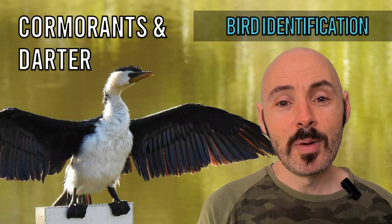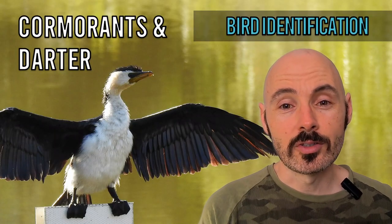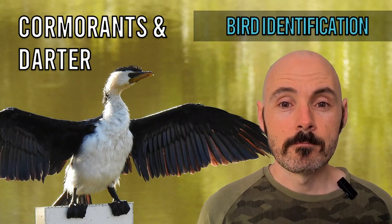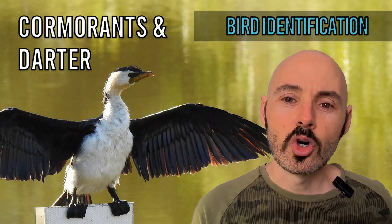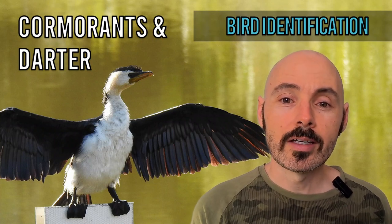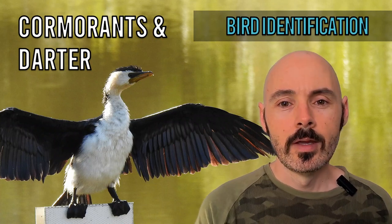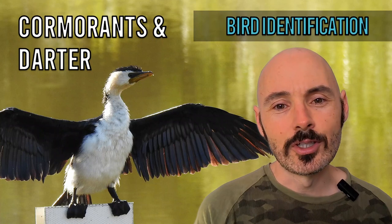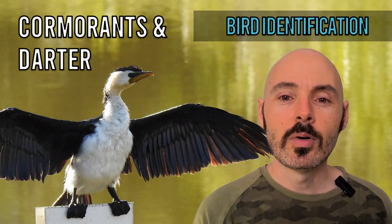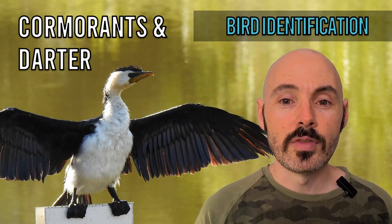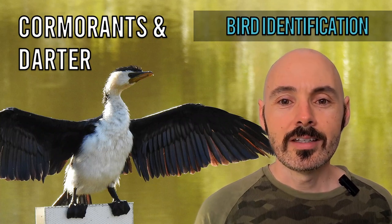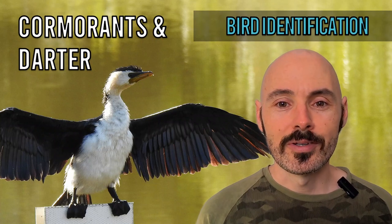Hey everyone, you might have seen this bird on the screen before, spreading their wings out in front of a stretch of water. These birds are called cormorants, and Australia has five different species, along with one look-alike: the Australasian darter. By the end of this video you'll be able to identify them all. This video is for anyone who wants to improve their bird identification skills.